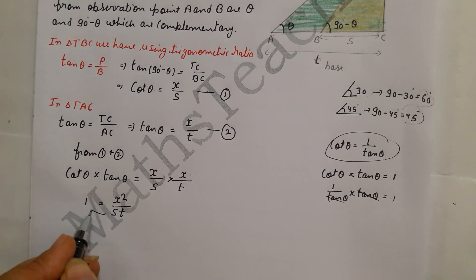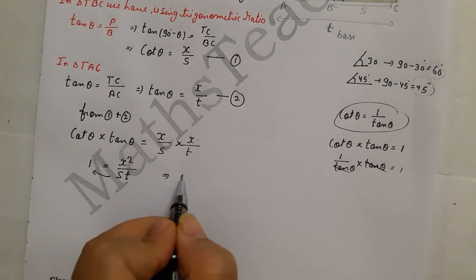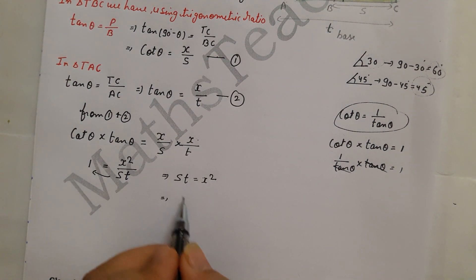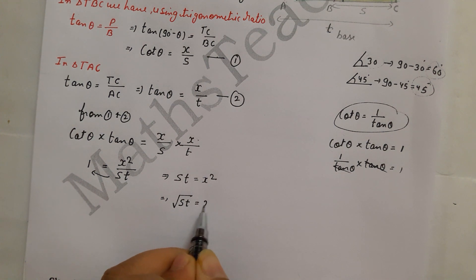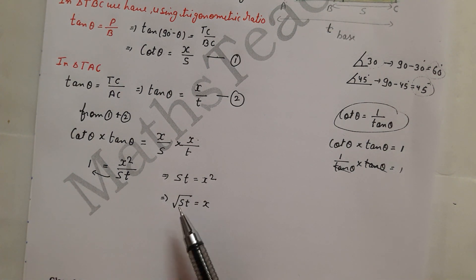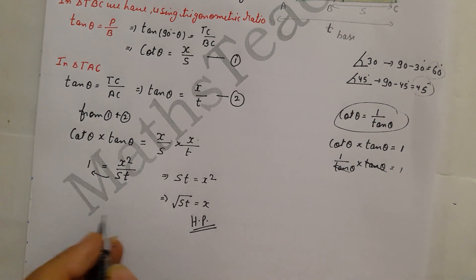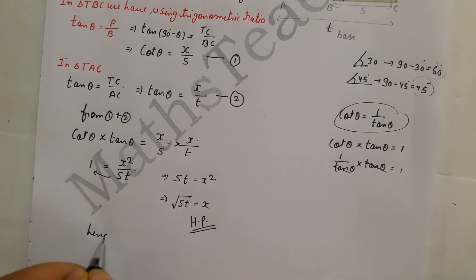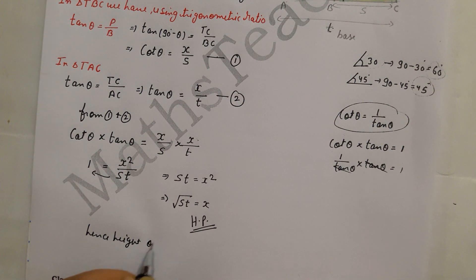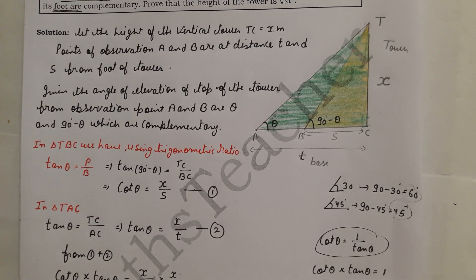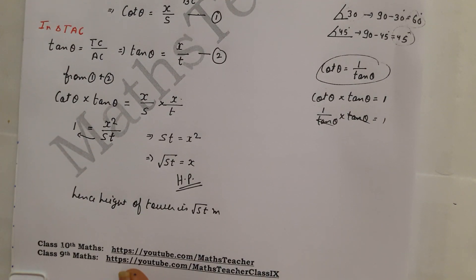Therefore st equals x squared. Taking the square root on both sides gives x equals plus or minus root st. Since height is positive, we take the positive value. Hence proved: the height of the tower is under root ST. I hope you have understood the question well. If you have any doubt, please write in the comment box. Thank you.